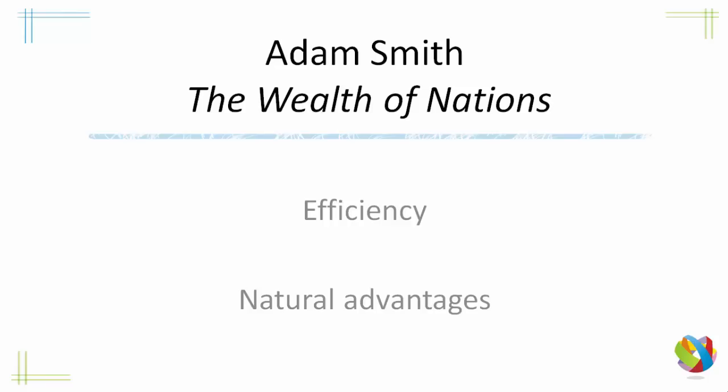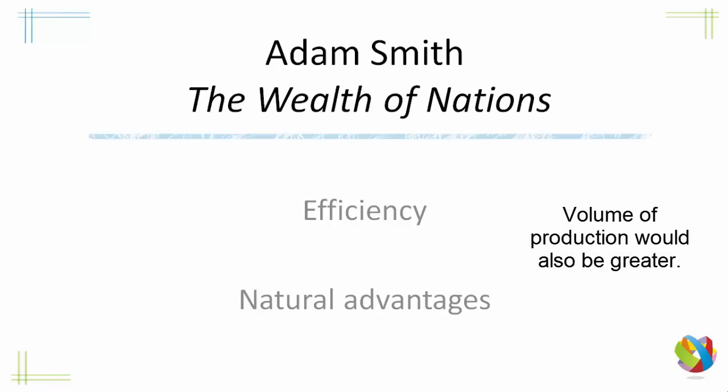So if England specialised in producing textiles for home and foreign use, and France specialised in producing wine, then England could import good wine at a cheap price, and France could import good textiles at a cheap price.